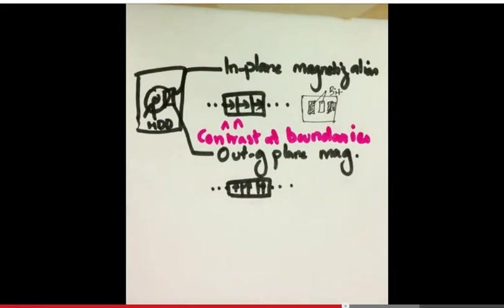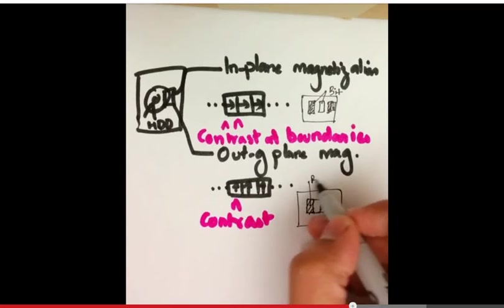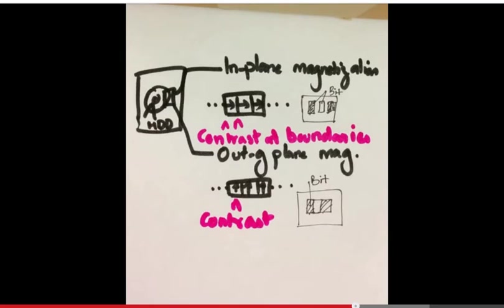In out-of-plane magnetization, the bit itself is responsible for the contrast. In this case, the dark and bright bands in the image signify the on or off state of the bits.